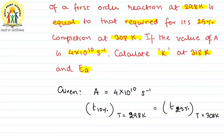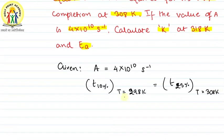The value of the rate constant is to be found at 318 Kelvin, and we also need the value of activation energy. First of all, we have to write the equation required for a first order reaction.